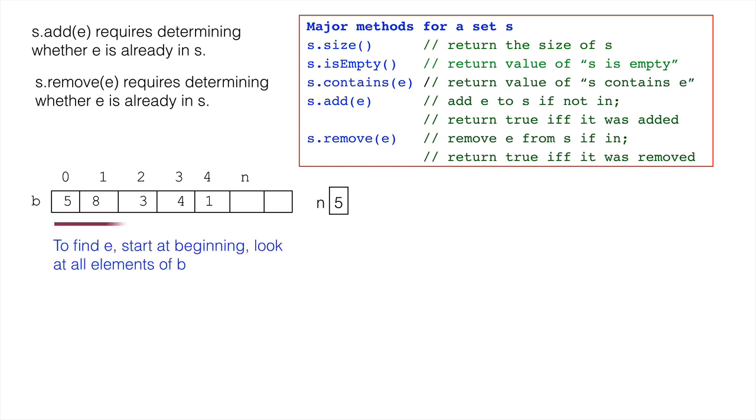A search for e is typically made starting at the beginning and looking at every element until e is found, or until the end is reached, meaning e is not in the set. This takes expected time O(n) and worst case time O(n). So operations add and remove take O(n) time.